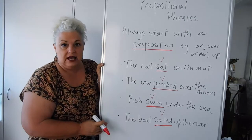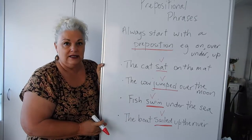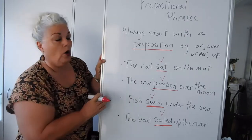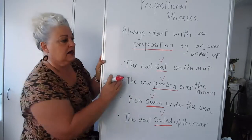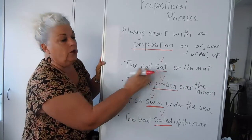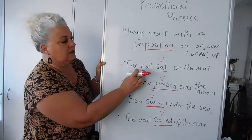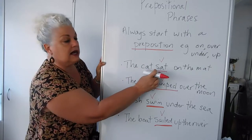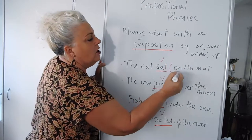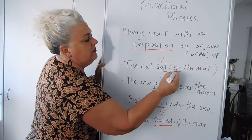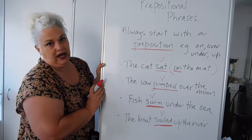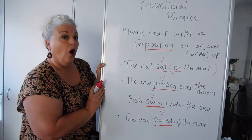I have three examples of prepositional phrases. In the first one: the cat sat on the mat. This is a simple sentence or a clause. It has a verb, sat. It has a subject, cat — the cat sat. And it also has a prepositional phrase, on the mat, beginning with the preposition on. It shows where the cat sat — the cat sat on the mat.